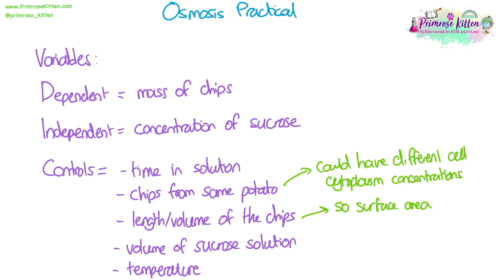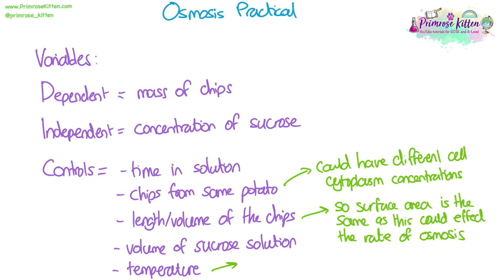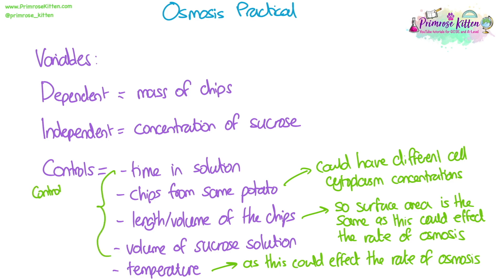The reasons for those controls: chips from the same potato ensures they don't have different cytoplasm concentrations from different plants. The length and volume of chips should be the same so that the surface area is the same, because increasing surface area could affect the rate of osmosis — it could happen faster for chips with greater surface area. There was even an exam question comparing normal chips with crinkle-cut chips — crinkle-cut chips have a bumpy surface and increased surface area, so you'd predict more osmosis happening faster. Temperature could also affect the rate of osmosis — increasing temperature increases the rate. Controlling all these variables means we can be confident in comparing results from each of our chips.